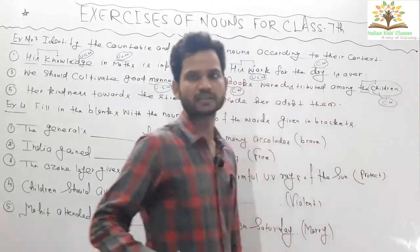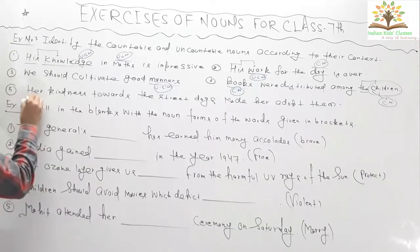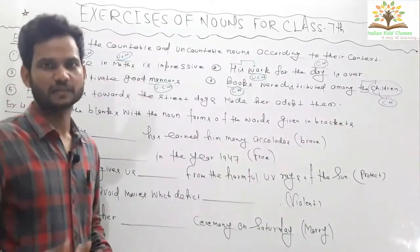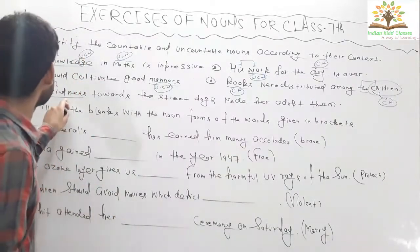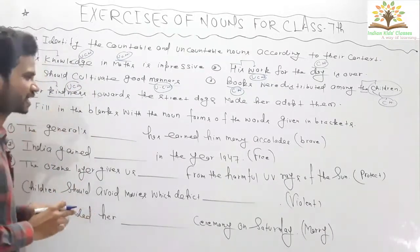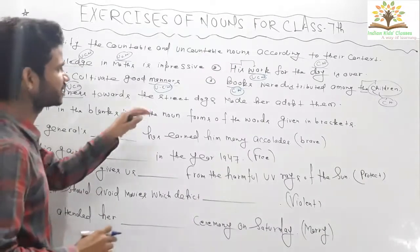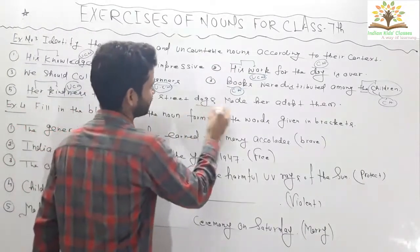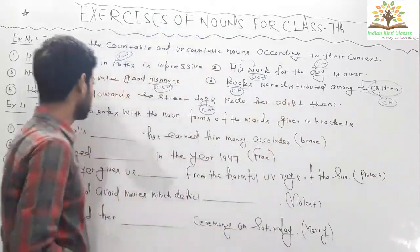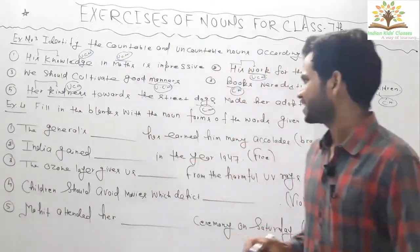Question five: 'Her kindness towards the street dogs made her adopt them.' After a possessive adjective we always get a noun, and here kindness is an uncountable noun — kindness cannot be counted, only felt. Dogs is a countable noun. 'Made her adopt them' contains no noun.